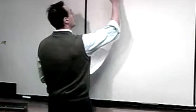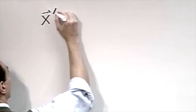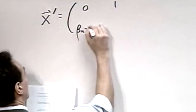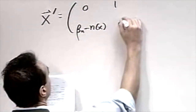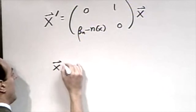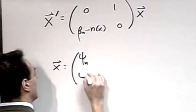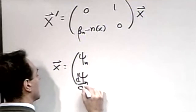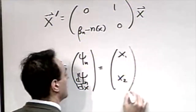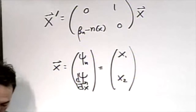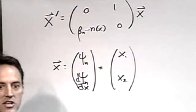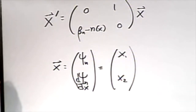So last time what we had done, we had written the problem as the following. We had written it as a system where the vector x was equal to psi of n, d-psi of n dx — two components. And we called these x1, x2. This is the problem formulation we had come up with last time in class. What we're going to do here in class today is going to be a simpler version of what you're going to have to solve in the homework.